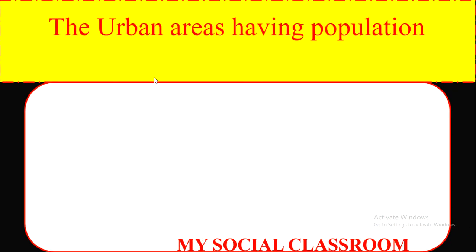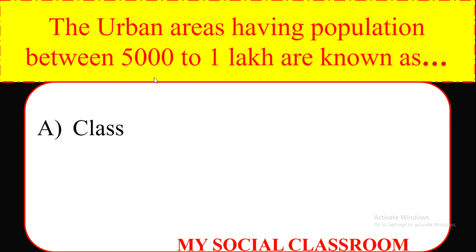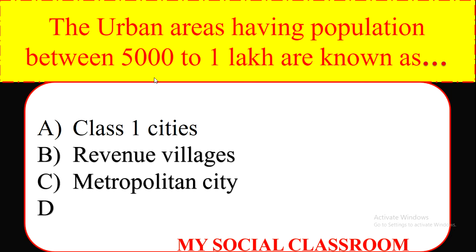The urban areas having population between 5,000 to 1 lakh are known as: Class 1 cities, revenue villages, metropolitan city, towns. Correct answer: towns.